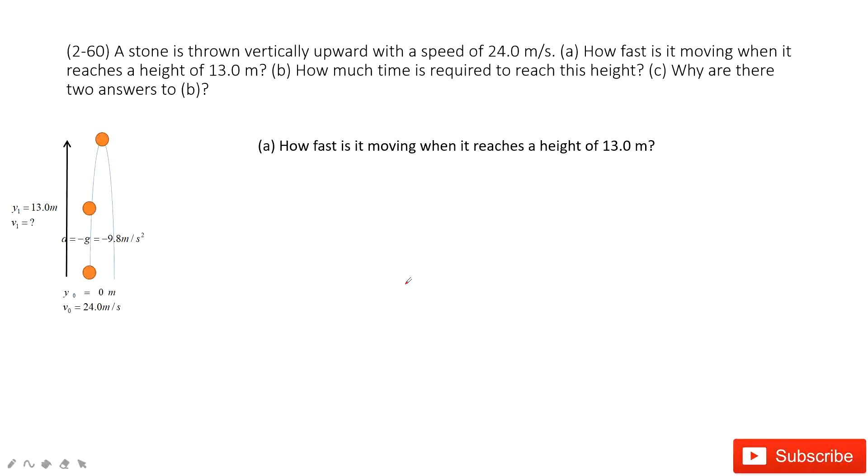We can see the first sentence: a stone is thrown vertically upward with a speed of 24 meters per second. The V0 is 24 meters per second, and we take this point as the reference point. The position is 0 meters.